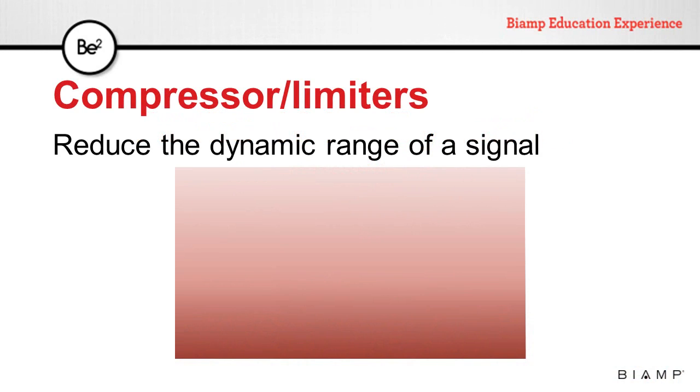Compressors and limiters are dynamic processors that reduce the dynamic range of a signal. For instance, if we have a signal with a certain noise floor and a signal peak level, the difference between those two levels will give us a dynamic range of that signal.